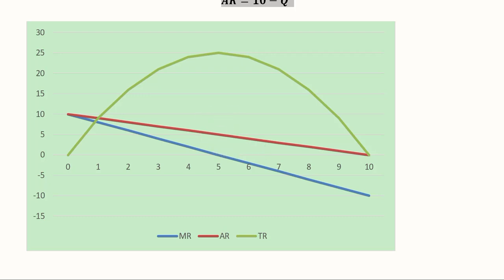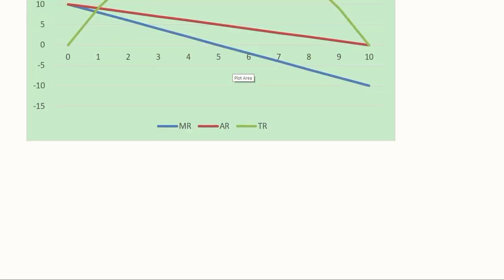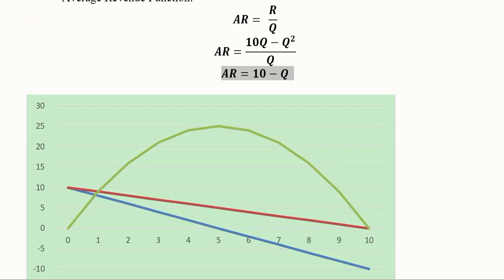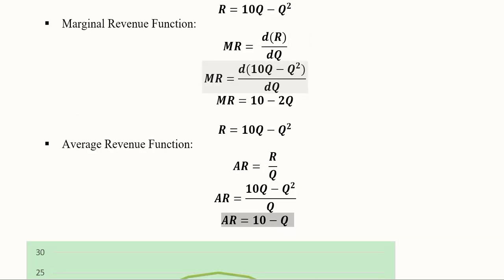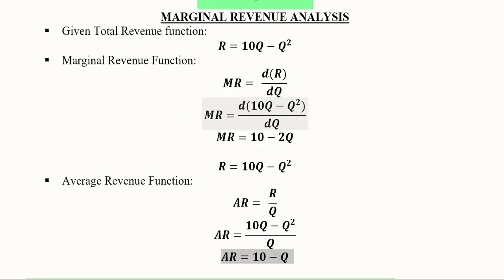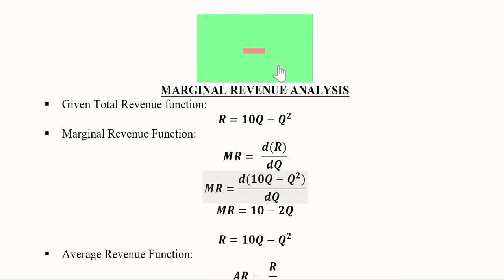Average revenue curve is above the marginal revenue curve, and here this is the total marginal revenue function. So this was about the marginal revenue analysis where we also found the average revenue, and for marginal revenue we used the derivative and the rules of differentiation.